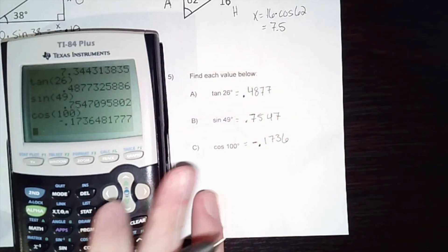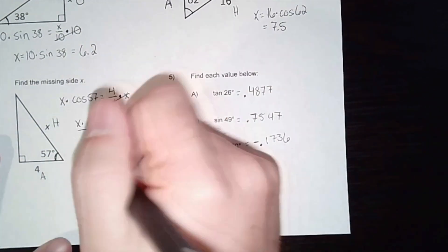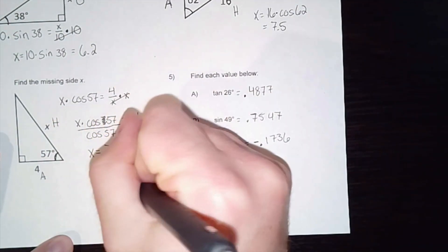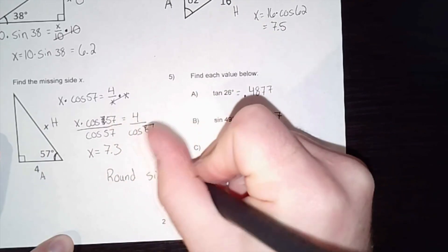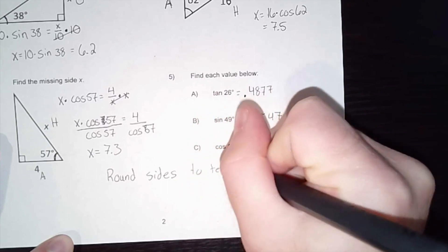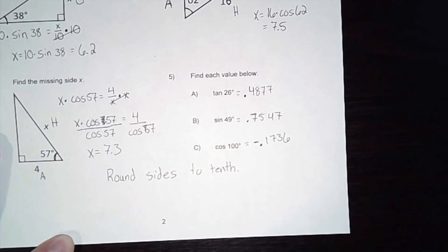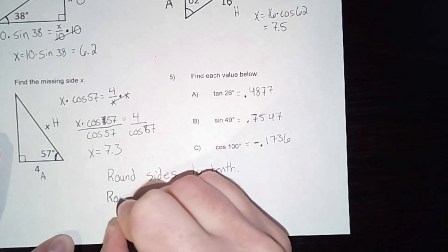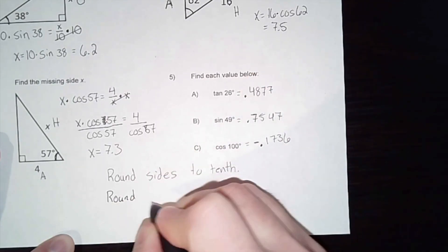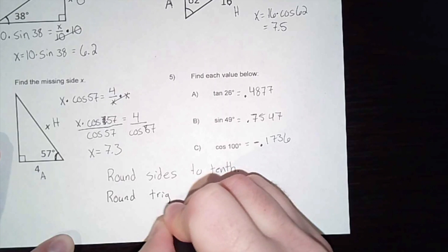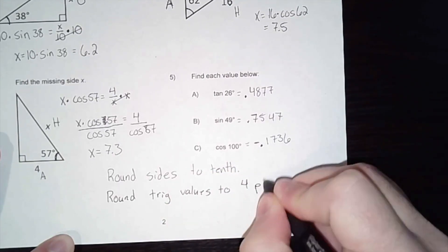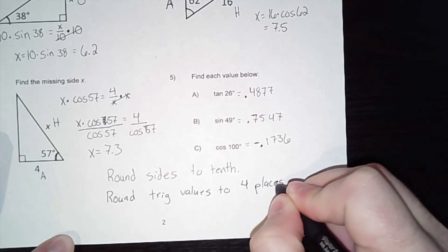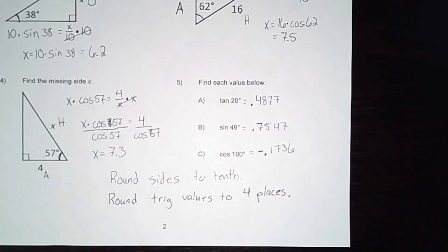That's really it for notes today. One last thing to cover is rounding: if you are finding a missing side length, round to the nearest tenth — just one decimal place. If you are finding just the value of a trig ratio, as we did in number five, round those trig values to four decimal places. That gives enough accuracy to get good answers without rounding too much. That is your introduction to trigonometry.